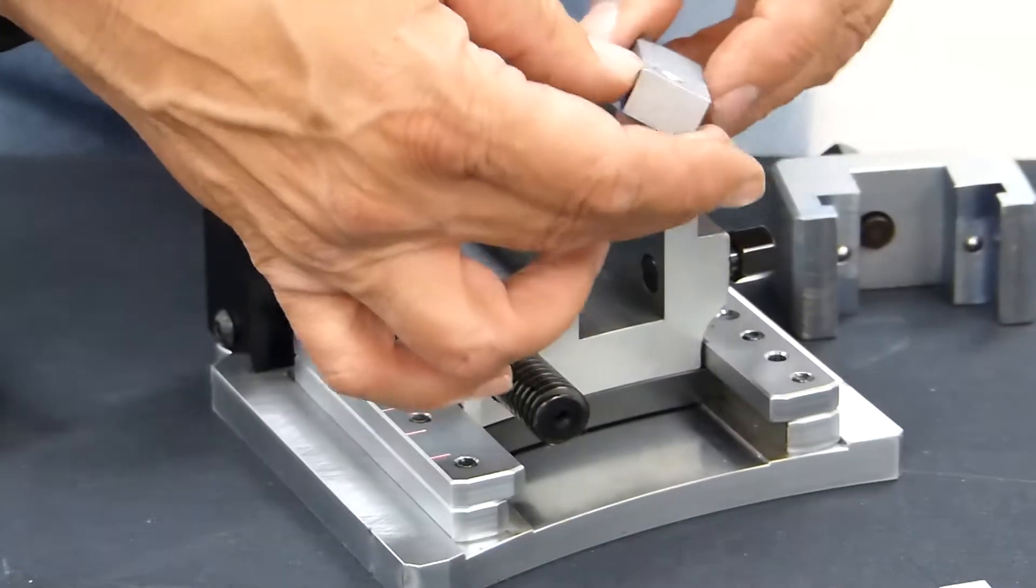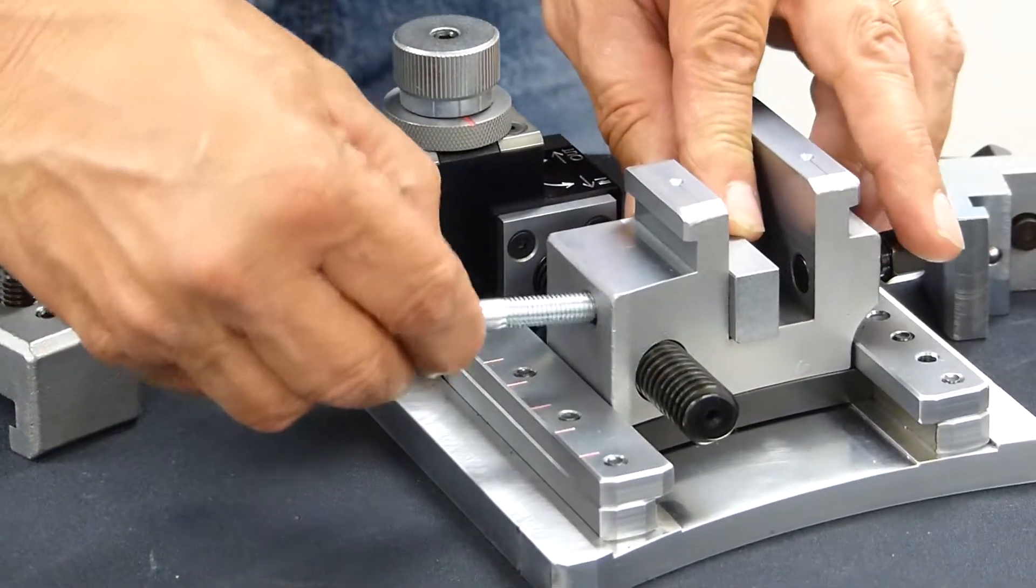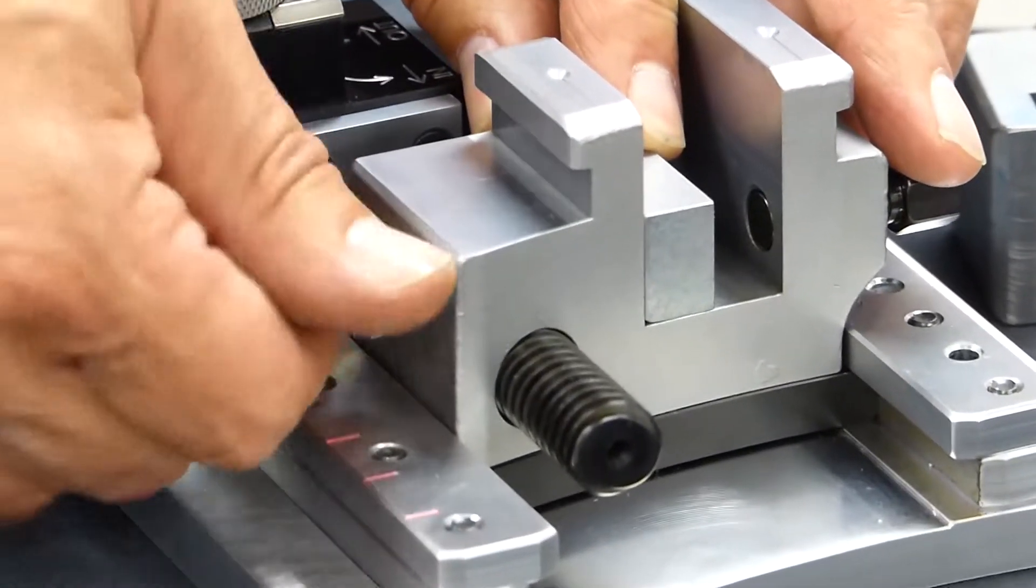Now on the second slide, we'll use the taller of the two spacers, three quarter inch. Place it into the slide and secure it.